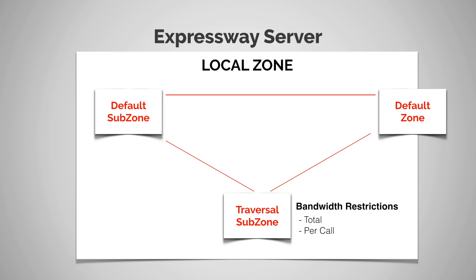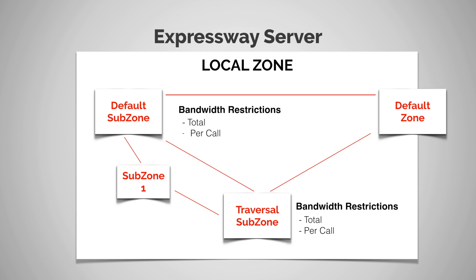You're going to see something a little different for sub zones that endpoints can register to. For example, for the default subzone, or an additional subzone you've created like subzone one, the endpoints can register there. So you're going to have a total bandwidth, but now the per call bandwidth is further divided into two additional forms: a per call in/out restriction and a per call within restriction.